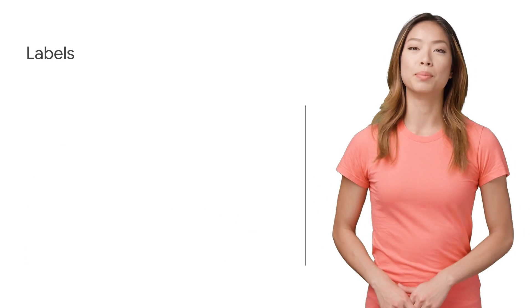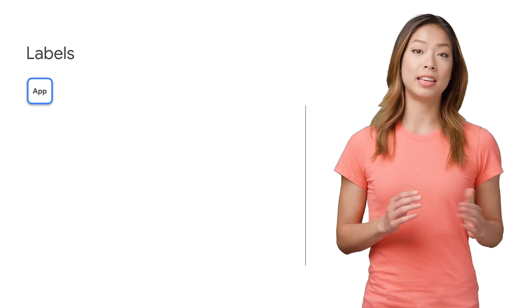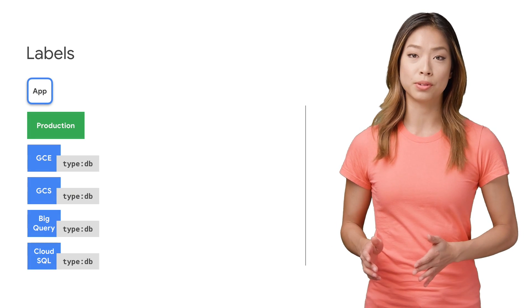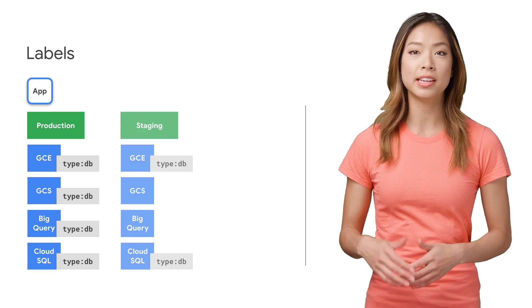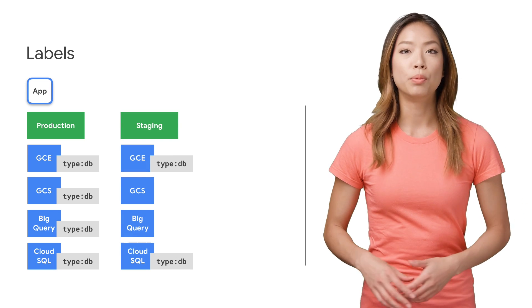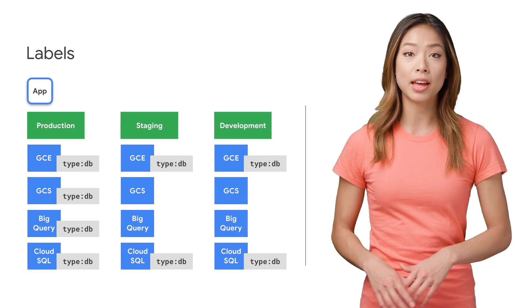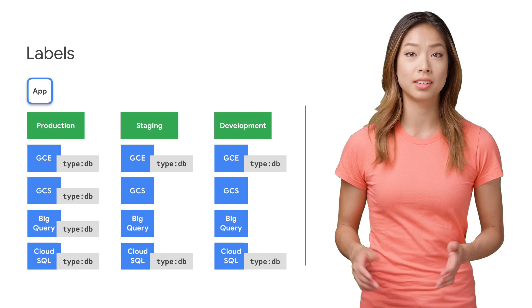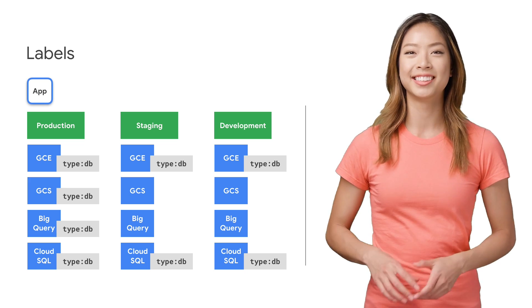Next, let's talk about labels. Those are ad hoc key-value pairs that are assigned to resources, like VMs and GCS buckets, which are categorized in billing so that you can assign specific cost centers or teams to foot the bill.